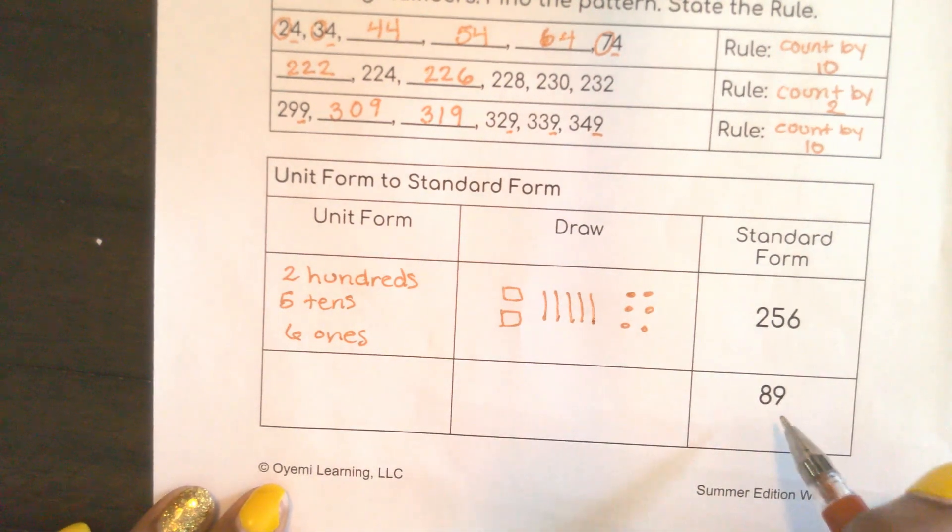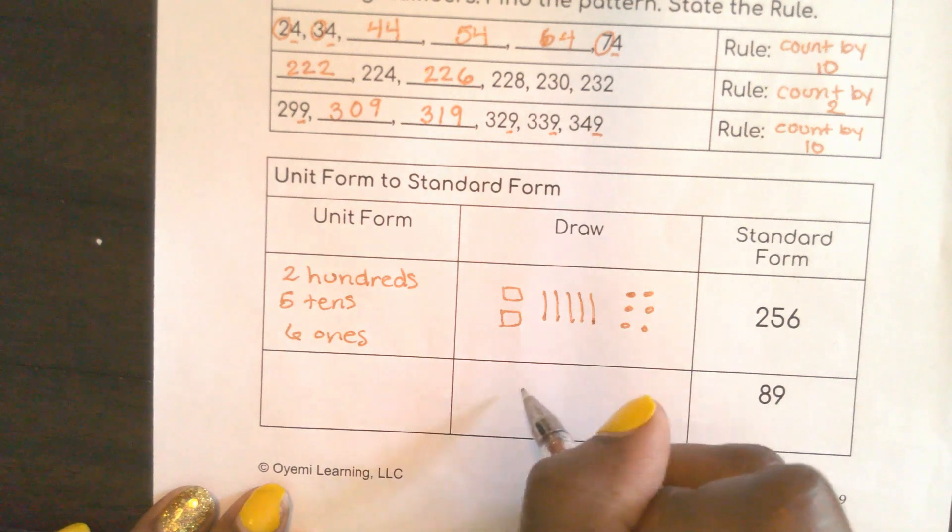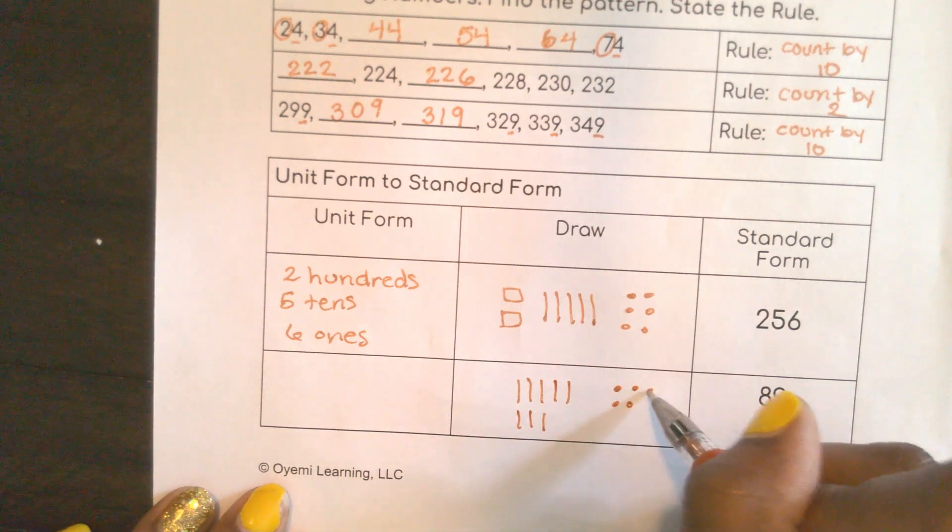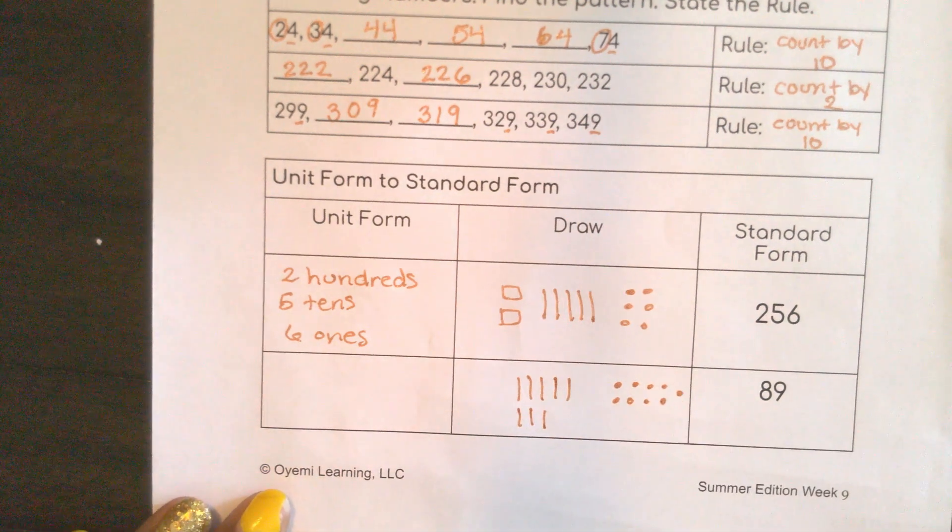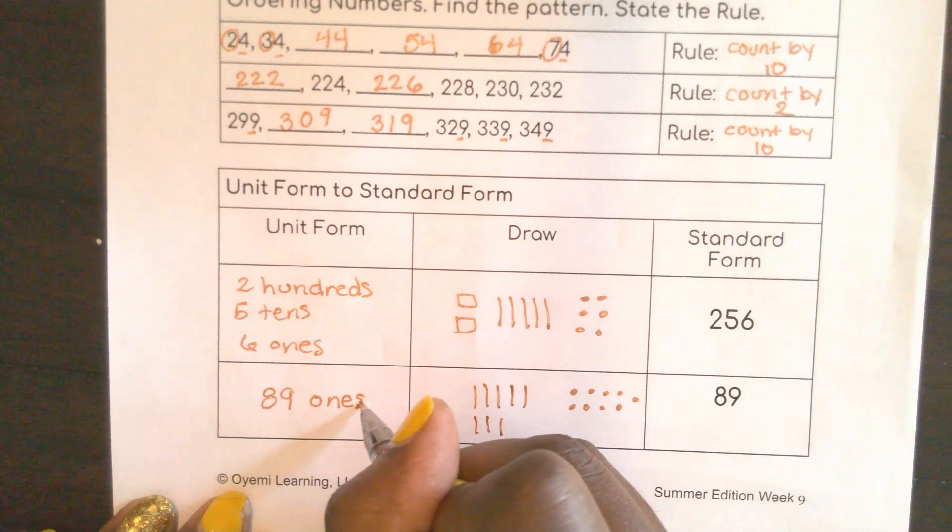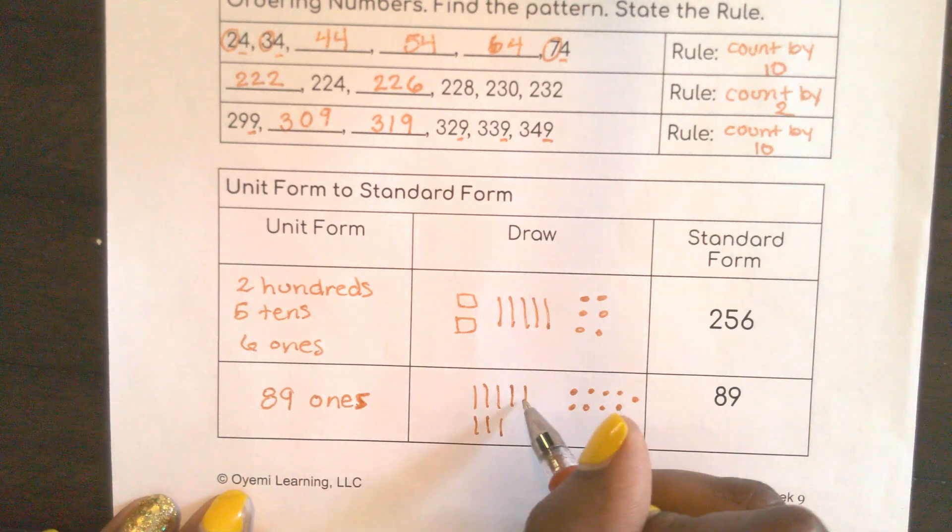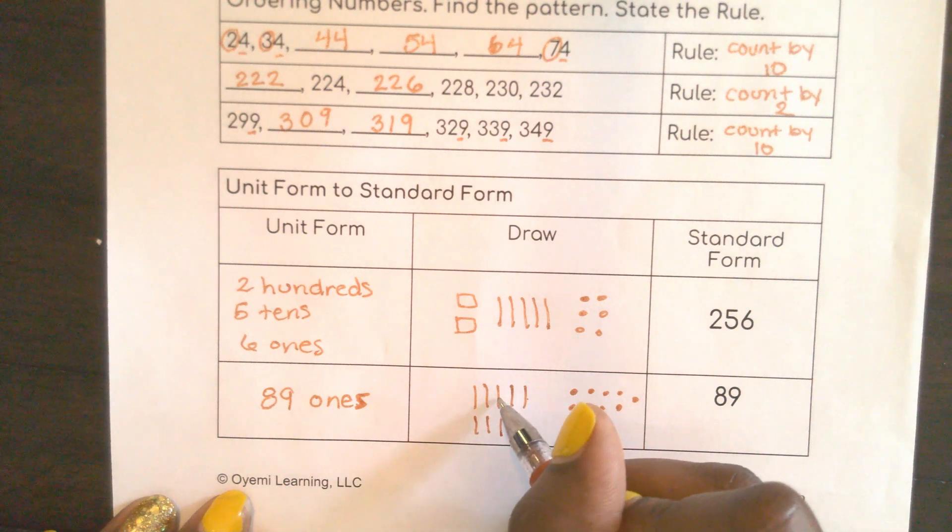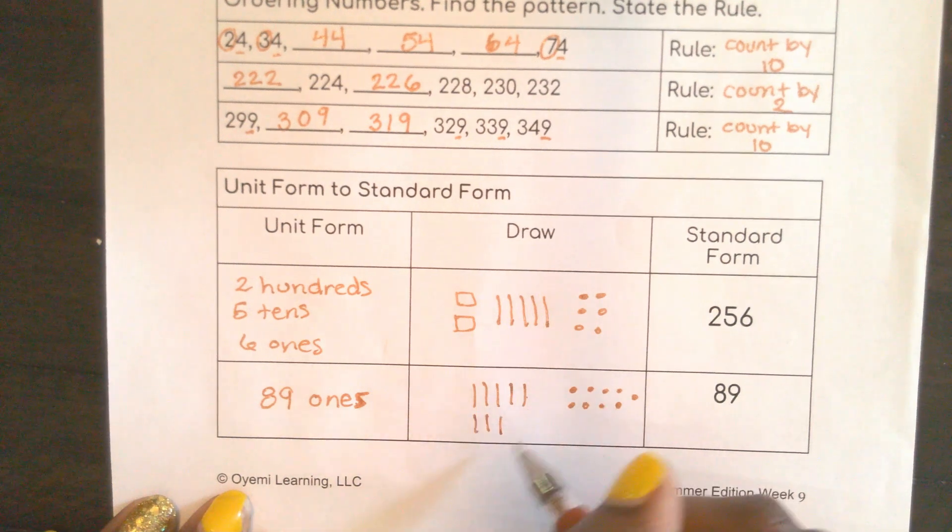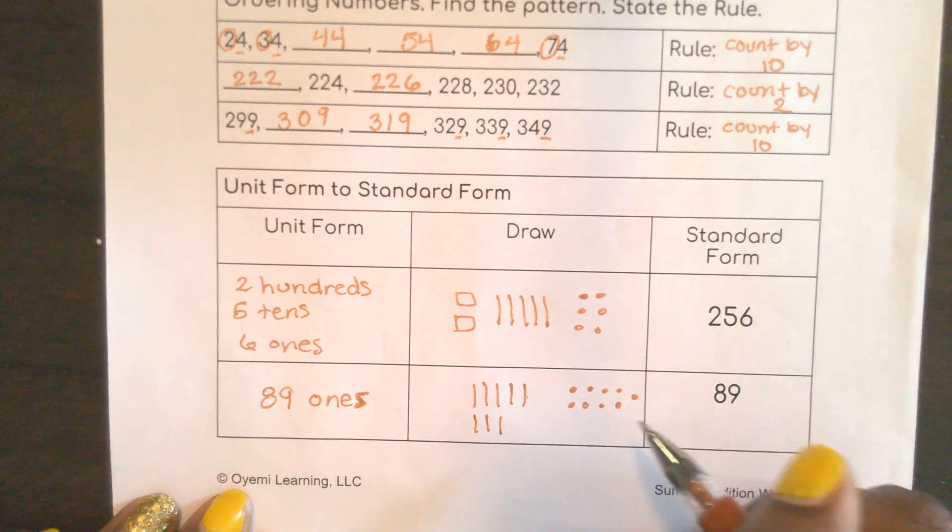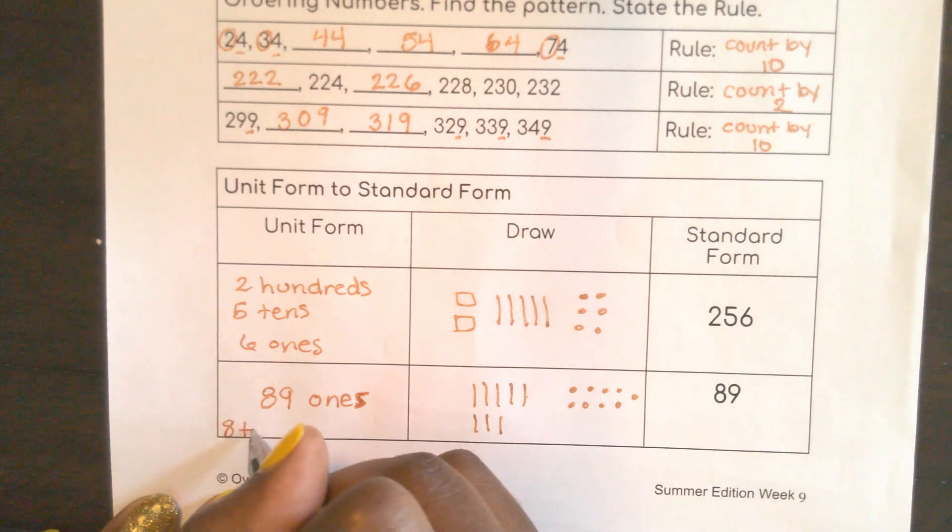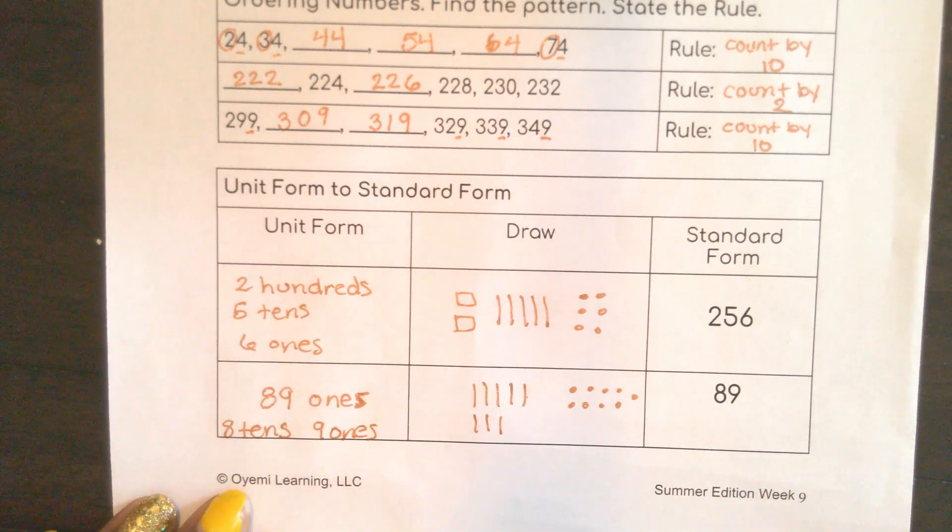Now here I have 89. So here I have 10, 20, 30, 40, 50, 60, 70, 80, and then 9, 1, 2, 3, 4, 5, 6, 7, 8, 9 ones. I could actually write this as 89 ones, because each one of these is 10 ones, 10, another 10, another 10, another 10, 40, 50, 60, 70, 80. I could turn all of these into ones, and then I could also have 9 ones, so all together that could be 89 ones. Or you could write it as 8 tens and 9 ones. Either way works.